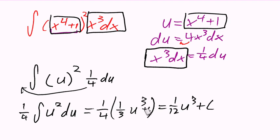What I did there is technically valid. I took the 1 3rd u to the 3rd plus c and put it inside the parentheses, where you multiply the 1 4th through. But because the c is an arbitrary number, you can just absorb the 1 4th into it. Now that we have 1 12th u to the 3rd, we're going to substitute our u back in to give us 1 12th (x to the 4th plus 1) raised to the 3rd power plus c. And that's our answer.